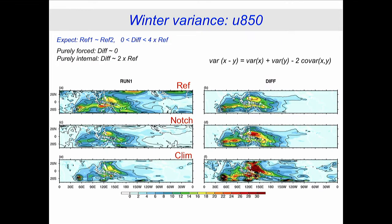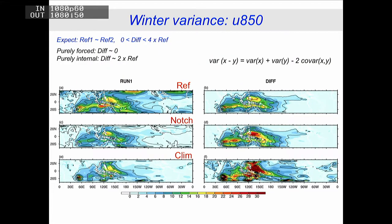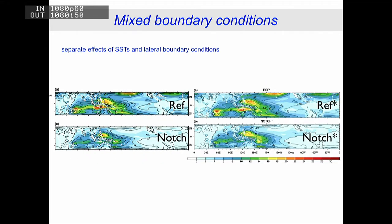Summary: for reference, notch, and climatology runs, the variance gets weaker while the internal difference gets stronger. The crossed experiments with mixed SSTs show that ref-star looks very much like the reference run, and notch-star looks like the notch run — implying it's the lateral boundaries which determine the solution, not the SSTs.